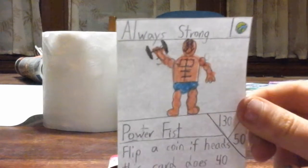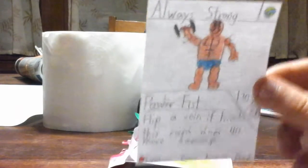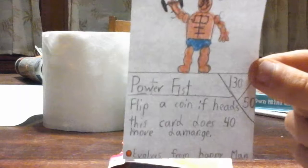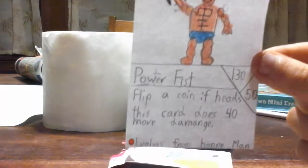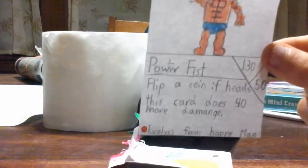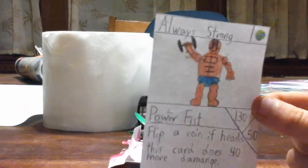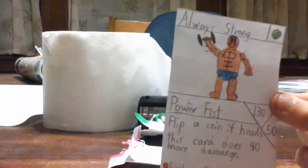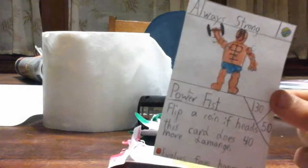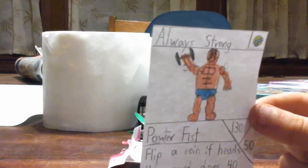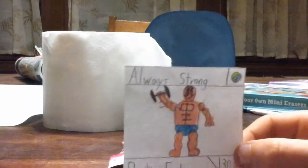Yeah, another rare. Always Strong, he's an earth type. Power Fist, 130 health, 50 damage. Flip a coin, if heads this card does 40 more damage. Evolves from Happy Man. Happy Man evolves from Always Happy. So this is a rare, so this is a good card too. He kind of looks so funny, just has undies on, but yeah.